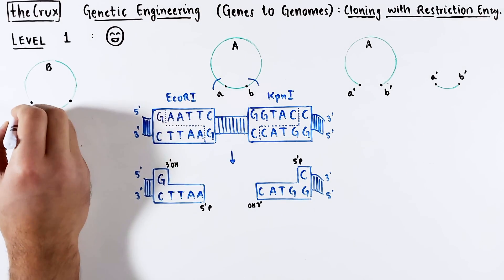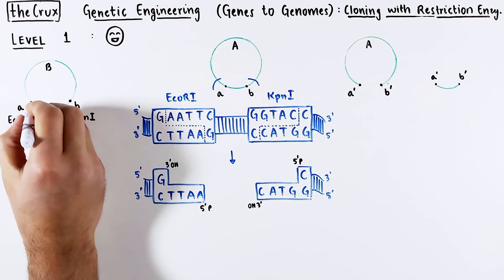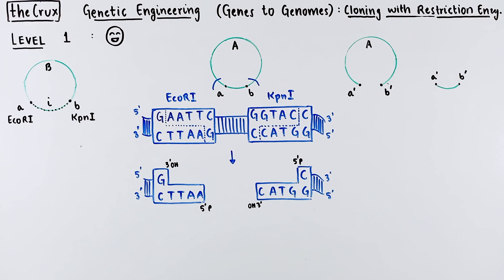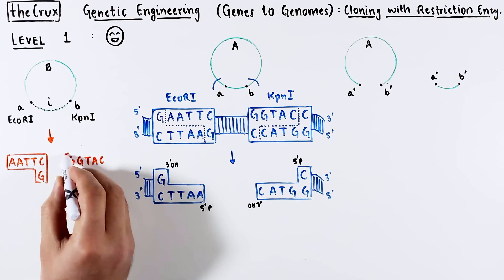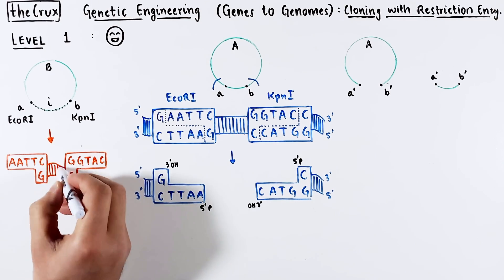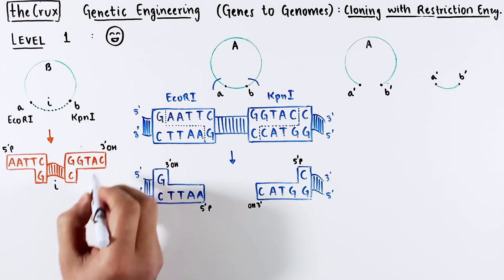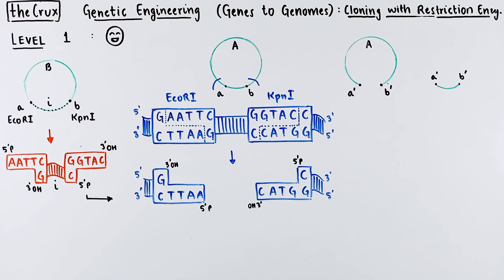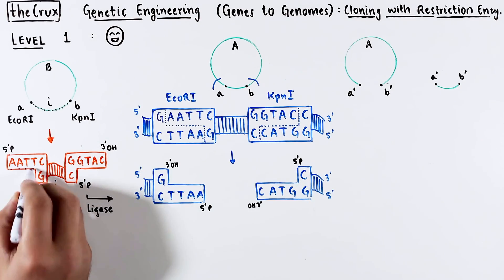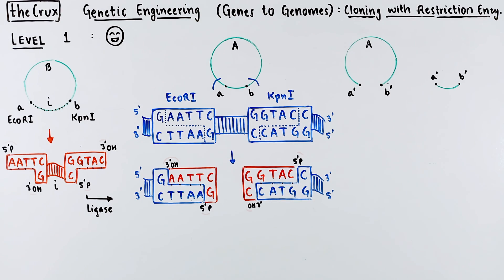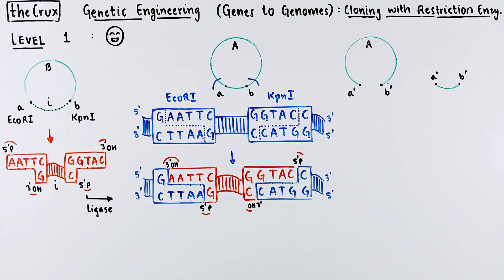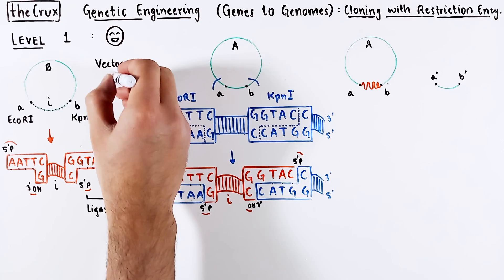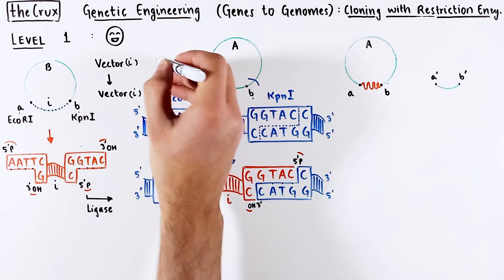Now say you have a second vector containing the same A and B sites, but it contains a DNA of your interest called I, which you would like to insert into vector A. You digest vector B with EcoR1 and KPN1, save the insert and discard the rest of the vector. The insert can be ligated with vector A using a ligase. In ligation, the sticky ends find each other through base pairing and the phosphates and hydroxyls are used to construct the phosphodiester bond. This simple process of moving an insert from one vector to another is called subcloning.